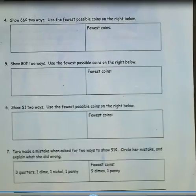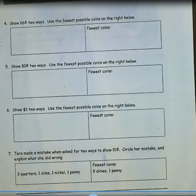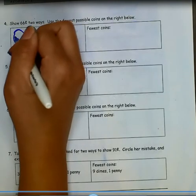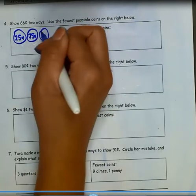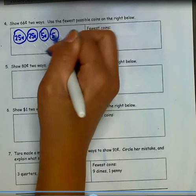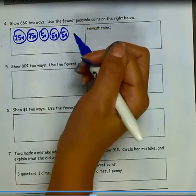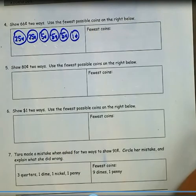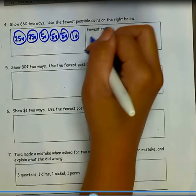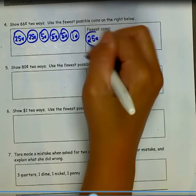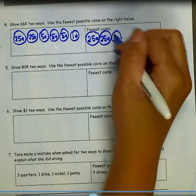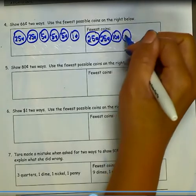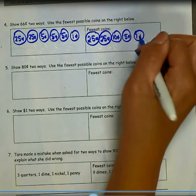Number 4: Show 66 cents two ways. Use the fewest possible coins on the right below. I could use 2 quarters at 25 cents each, 3 nickels at 5 cents each, and 1 penny. Using the fewest coins, I could use 2 quarters, 1 dime, 1 nickel, and 1 penny to get a total of 66 cents.